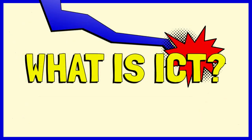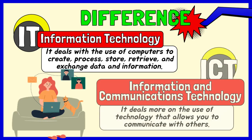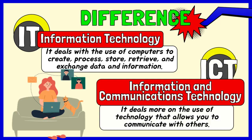Let's start talking about the difference between IT and ICT. Information technology, or IT, deals with the use of computers to create, process, store, retrieve, and exchange all kinds of electronic data and information. On the other hand, information and communications technology, or ICT, is more inclusive of technology that allows you to communicate with others.